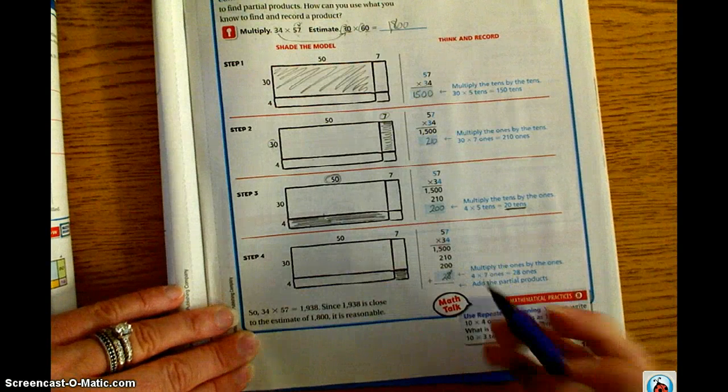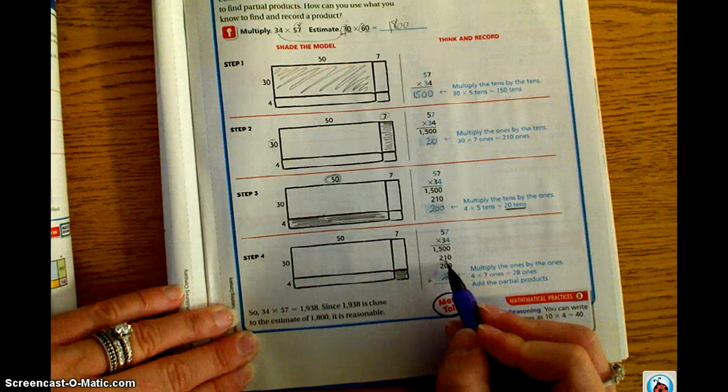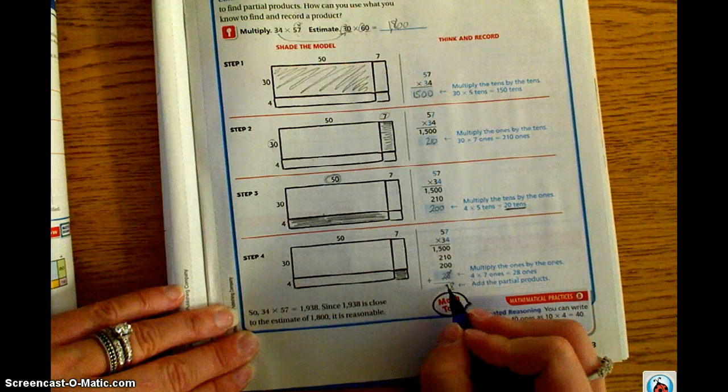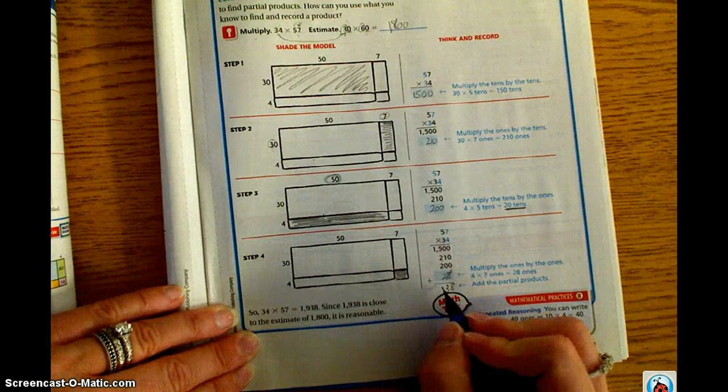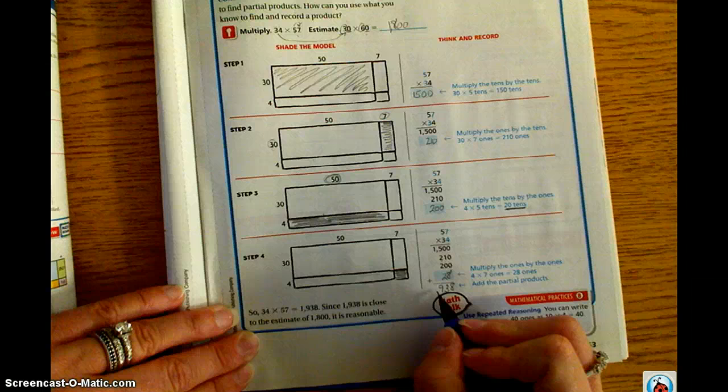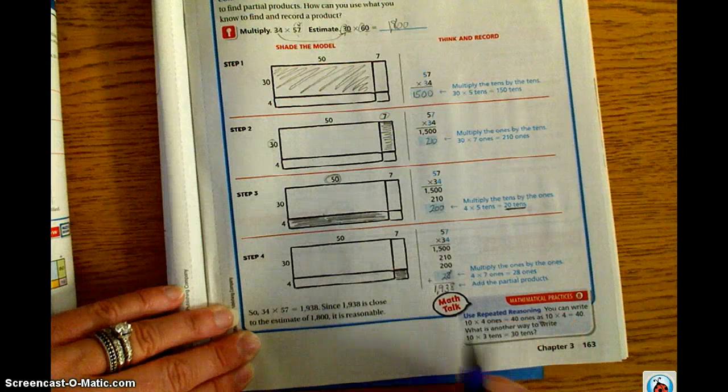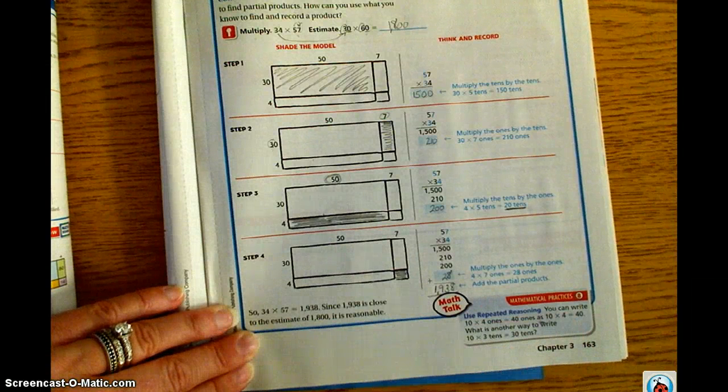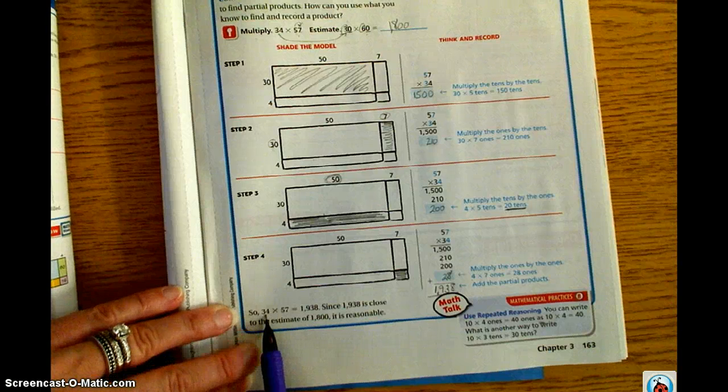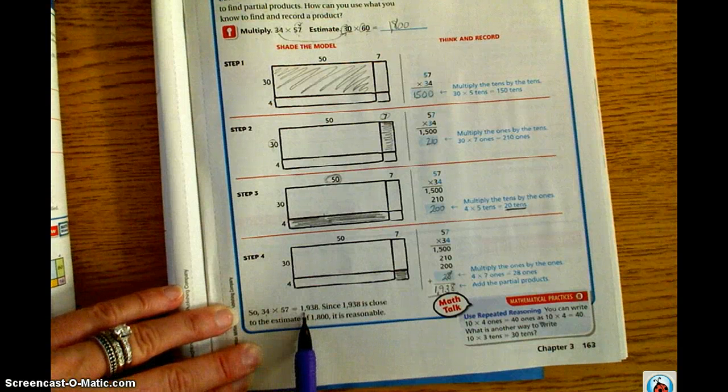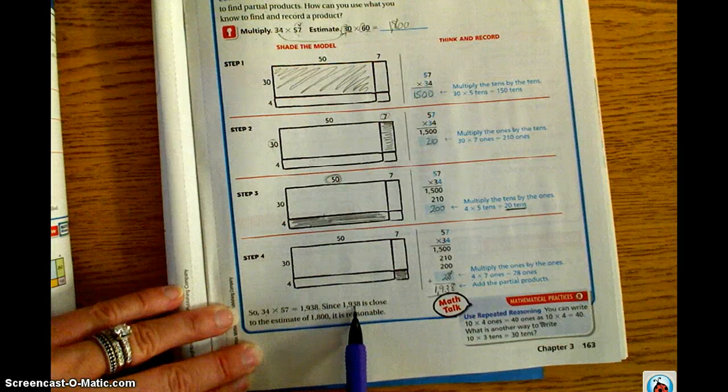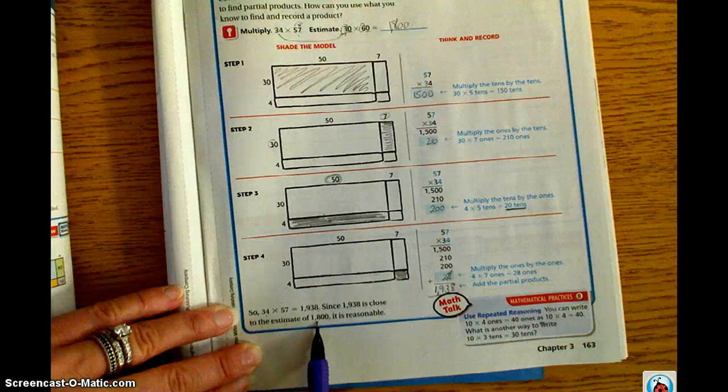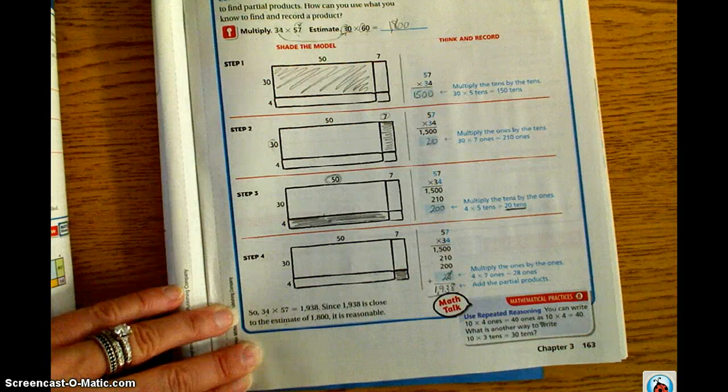So, 0 plus 8 is 8. 1 plus 2 is 3. 5 plus 2 is 7, plus another 2 is 9. And then 1 plus 0 is 1. So we know our answer, 1,938. So, 34 times 57 equals 1,938. Since 1,938 is close to the estimate of 1,800, it is reasonable.